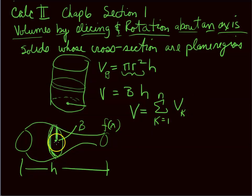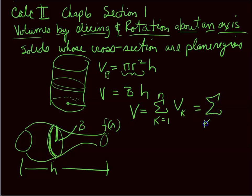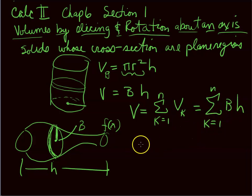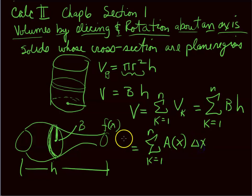The volume is the sum, k going from 1 to n (if we slice into n pieces), of the volume of each piece. Each looks like a squashed cylinder. This is the sum from k=1 to n of the area of the base times the height. The area can be written as a function A(x), and the height is Δx.